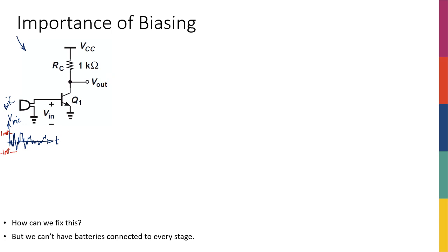Let's say somebody told me this configuration with the transistor gives you an amplifier, and I want to verify it. For amplification and signal analysis, I have to draw the small signal model of my transistor, because the DC analysis is only good for finding DC current and DC voltages of different terminals. If I want to know how much amplification I get, I have to look at the small signal model and find gm, r-pi, and r-naught.